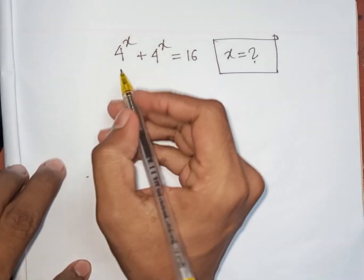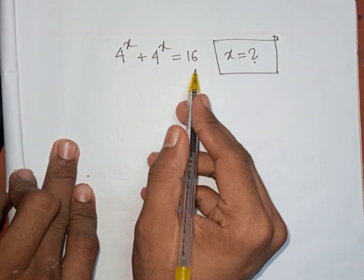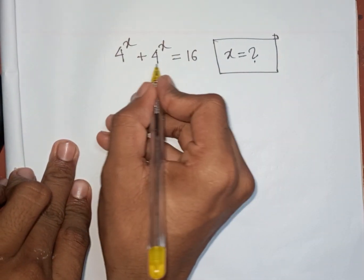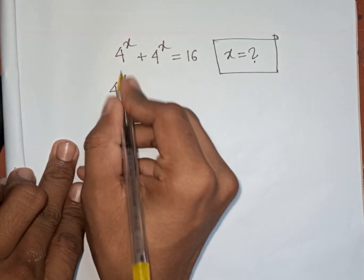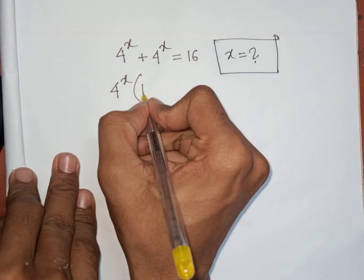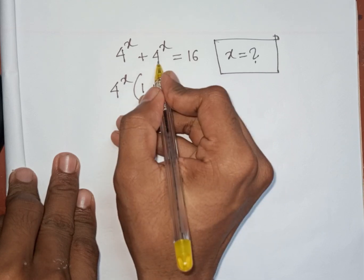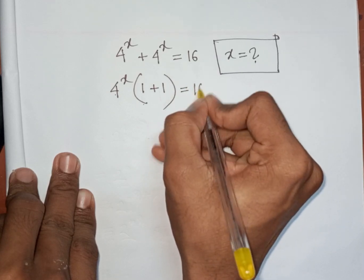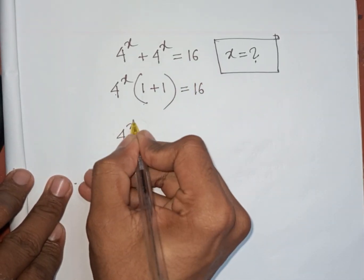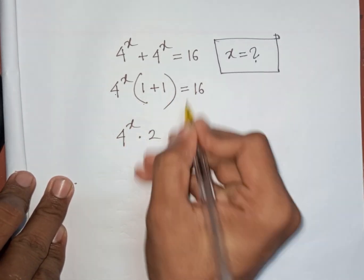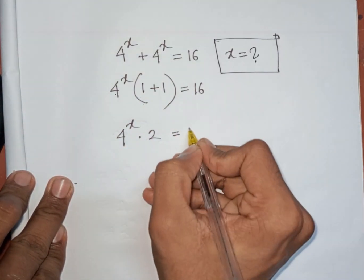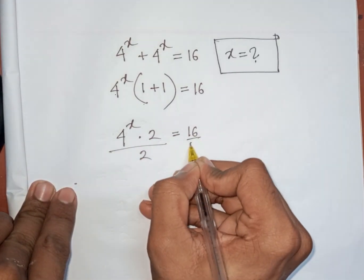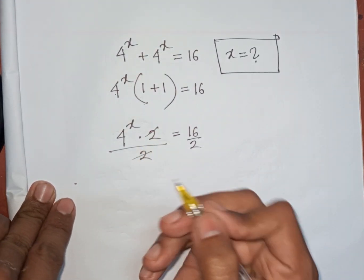Now, how to solve 4^x + 4^x = 16? We take 4^x as common, so 4^x is out of the bracket, giving 4^x(1 + 1) = 16, that means 4^x times 2 = 16. Dividing both sides by 2, 4^x = 8.